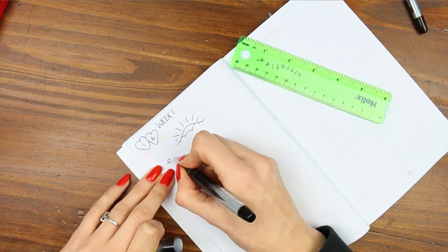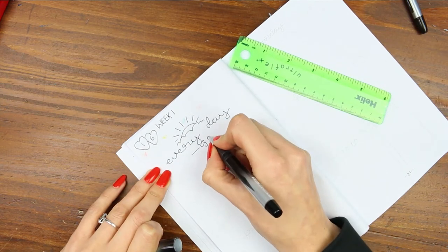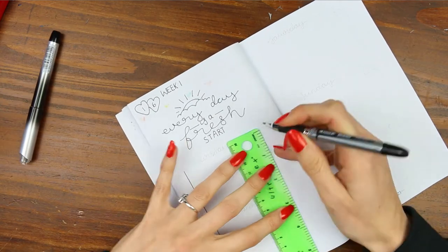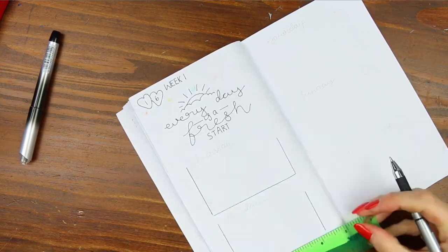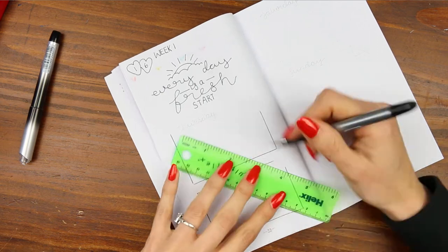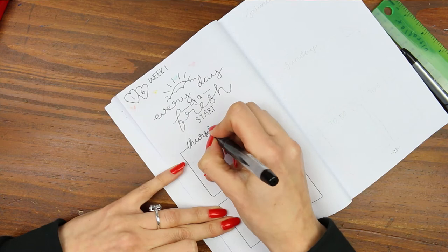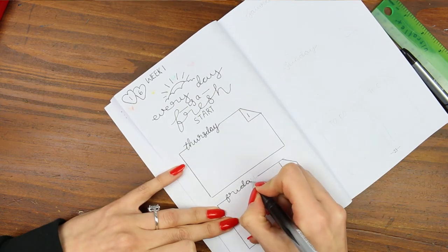Moving on to the next page, this is where my weekly spreads are going to start. And in February the first was actually on a Thursday so I knew I would have some room so I decided just to do a little quote at the top. And then I took my ruler and drew out some boxes and I just left gaps for the days of the week and the dates.